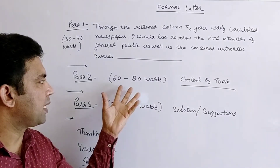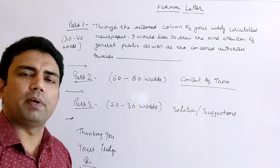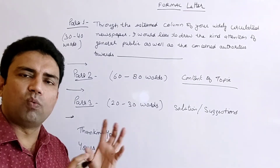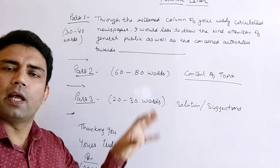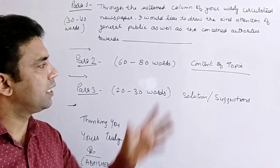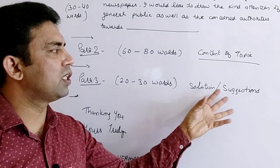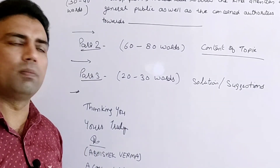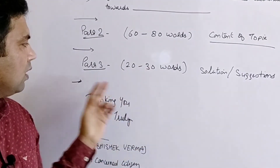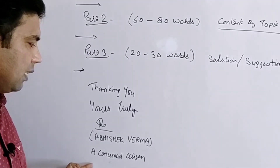Paragraph two is the main content — the biggest paragraph, minimum 60 to 80 words. Write everything about your problem or topic: how the problem started, how people are suffering, why it is important to bring notice to this problem, and what will happen if solutions are not met. After that, leave a line and come to paragraph three — 20 to 30 words — where you write your solutions and suggestions for the problem.